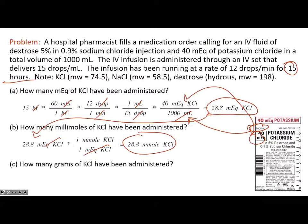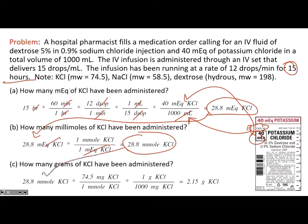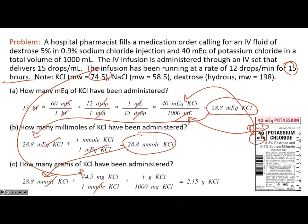Lastly, how many grams of potassium chloride? Take the 28.8 millimoles and convert to weight by multiplying by the formula weight of 74.5 milligrams per millimole — millimoles cancel. Then convert milligrams to grams by multiplying by one gram per 1,000 milligrams. The final answer is 2.15 grams of potassium chloride.